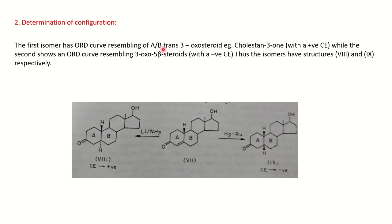The information given is that the A/B trans 3-oxo steroid, which is cholestinone, gives a positive Cotton Effect, while the ORD curve resembling the 3-oxo derivative with the cis configuration gives a negative Cotton Effect. So if you are told that the following reduction gives a positive Cotton Effect, you can confirm the configuration is trans. If it gives a negative Cotton Effect, you can draw the cis isomer. Based on the Cotton Effect, you can identify the configuration of the molecule.